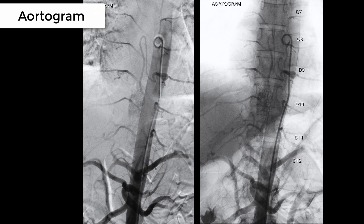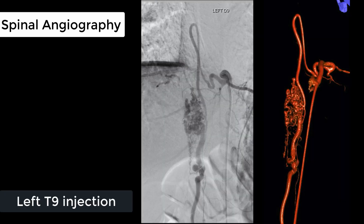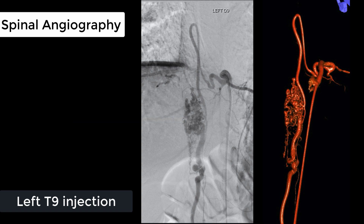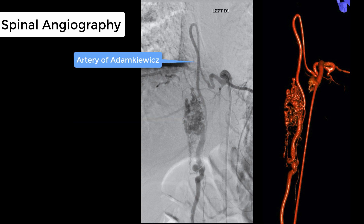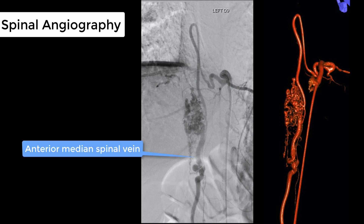Initial angiogram showed AVM nidus feeding from the artery of Adamkiewicz, which is arising from the left T9 intercostal artery. Selective left T9 intercostal injection showed a high-flow AVM nidus feeding from a hypertrophic artery of Adamkiewicz, and the AVM nidus is draining via a dilated tortuous anterior median spinal vein.